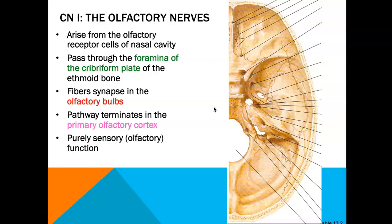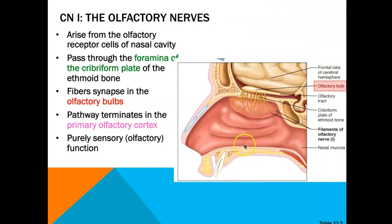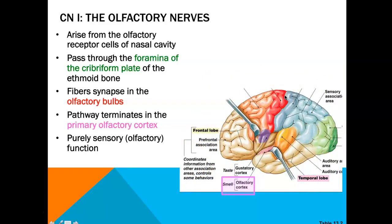Cranial nerve number one is your olfactory nerve. It arises from olfactory receptor cells of your nasal cavity and is purely sensory. A chemical stimulus of smell within the nasal cavity sends signals through the foramina of the cribriform plate — belonging to the ethmoid bone — where fibers synapse on the olfactory bulb. From there, in a mid-sagittal view, you can see the olfactory nerve coursing through the cribriform plate, connecting to the olfactory bulb, and traveling to the temporal lobe to synapse at the olfactory cortex.